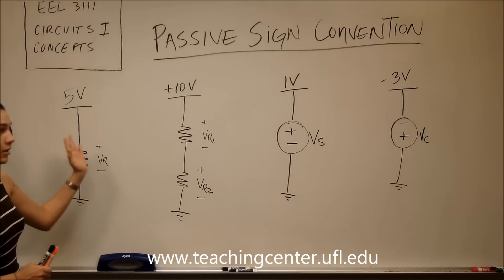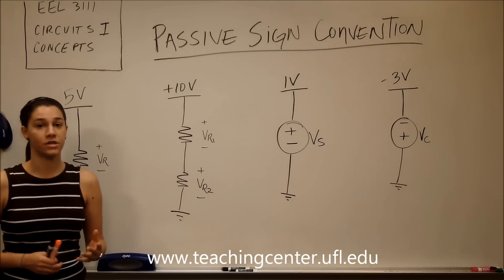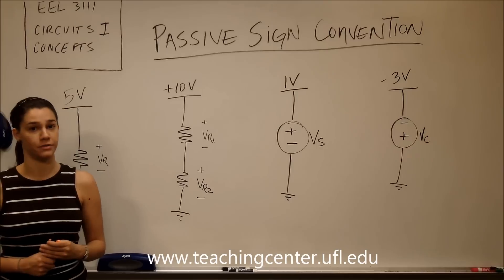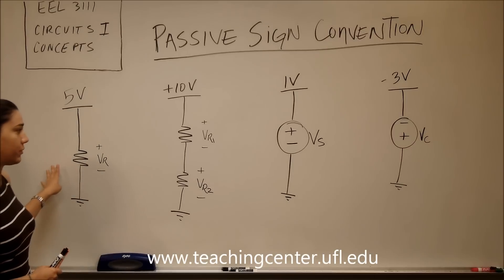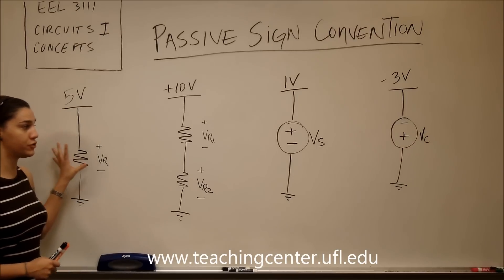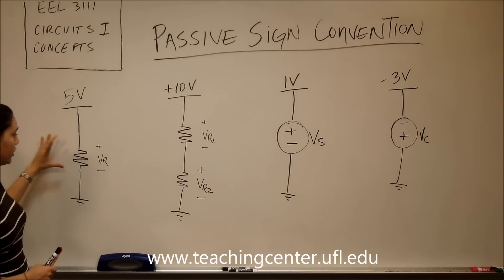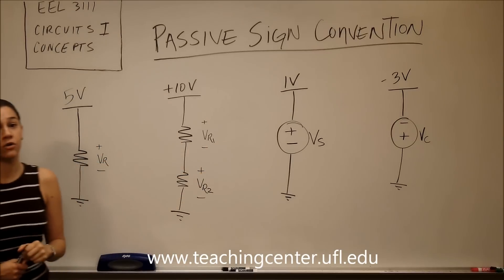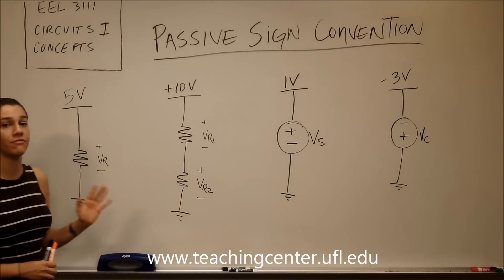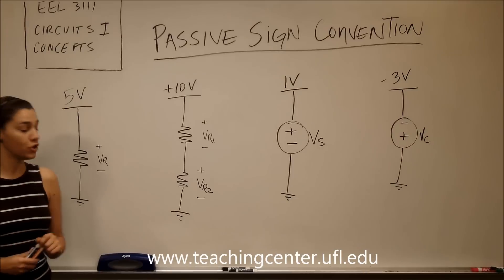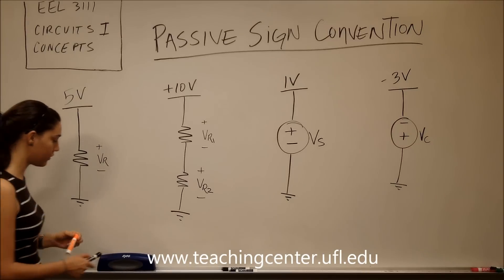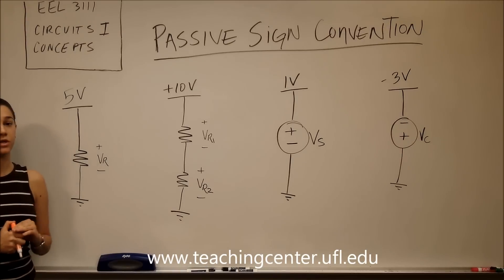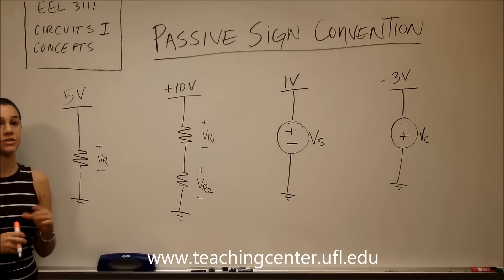Now let's go through a couple of examples so we understand what it means when passive sign convention is obeyed or not. In these four examples, the elements we're talking about are resistors and voltage sources. The currents in the circuit have not been drawn yet, so we're going to go through each of them and explain what it means when it's obeyed and when it's not.